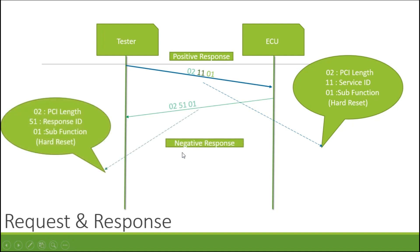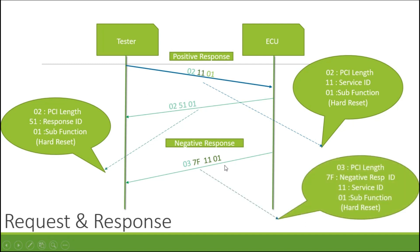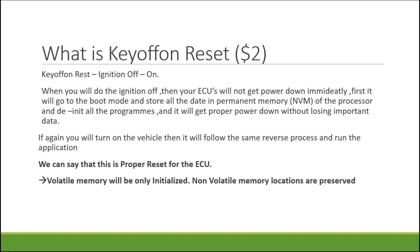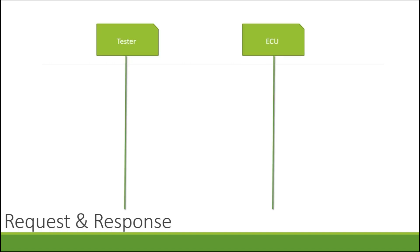Key off/on reset is like a driver turning the ignition off. When you do ignition off, your ECU will not power on immediately. It will go to boot mode, store all the data in permanent memory locations of the processor, de-initialize all programs, and do a proper power shutdown without losing any data. This is considered a proper reset of the ECU. Most OEMs use this key off/on reset. All volatile memory locations will be reinitialized and non-volatile memory locations will be preserved.